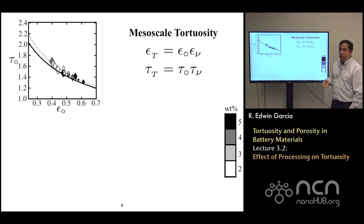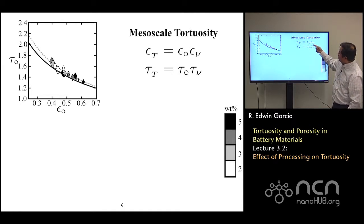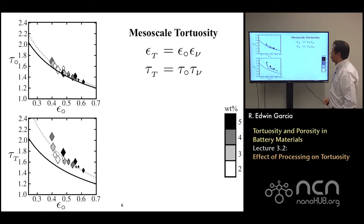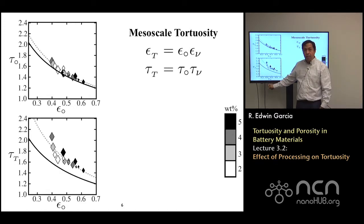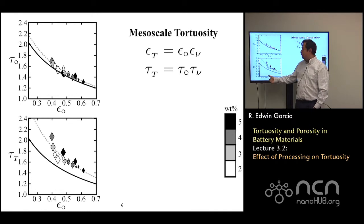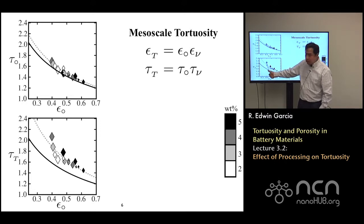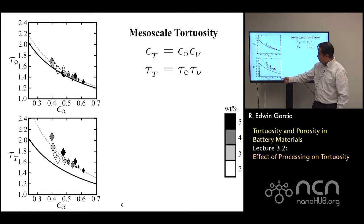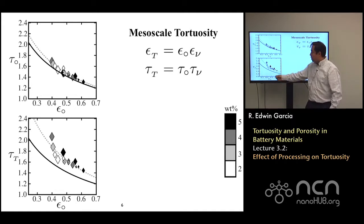If we include the dispersing effects of the binders in the electrolyte — that is, measuring the effect of epsilon times nu — and include that in the calculation as a function of epsilon (the effect of particles alone), you can see that results in a very strong amplifying effect on the tortuosity. For low porosities, the tortuosity jumps almost by a factor of 2 as a result of the binder itself. So the binder really has a very strong effect on the system.